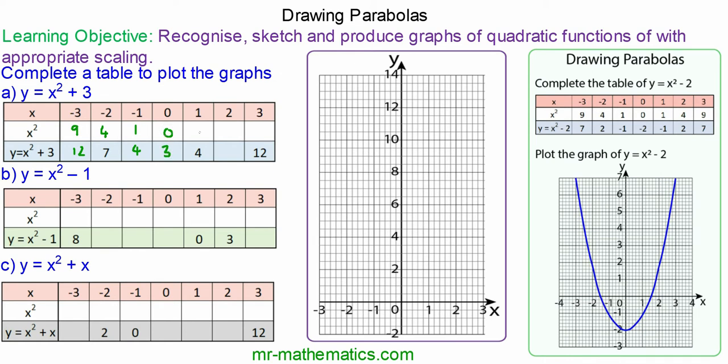0 squared add 3 is 3. 1 squared is 1 add 3 is 4. 2 squared add 3 is 7, and 3 squared add 3 is 12.